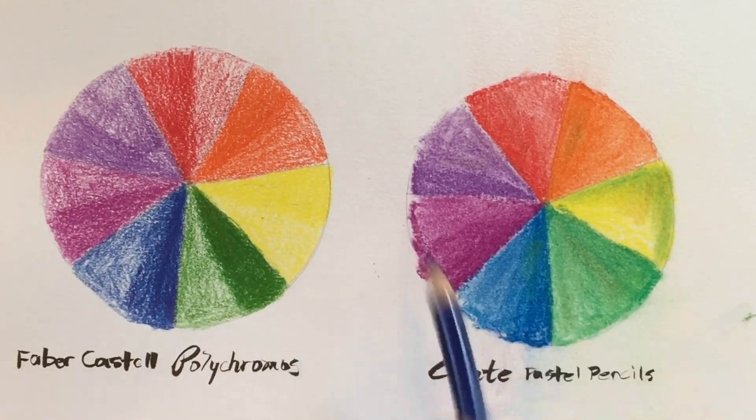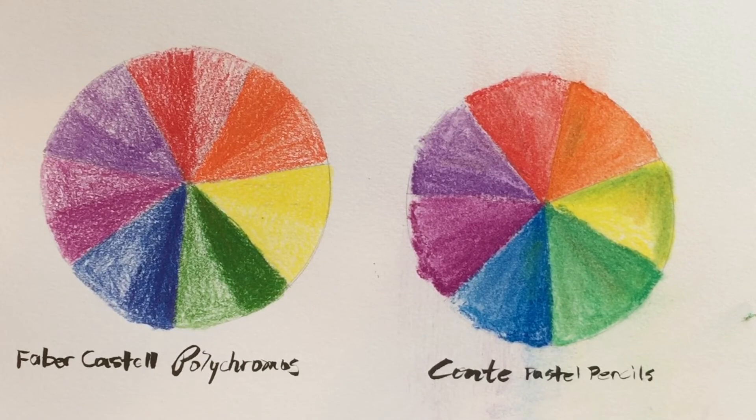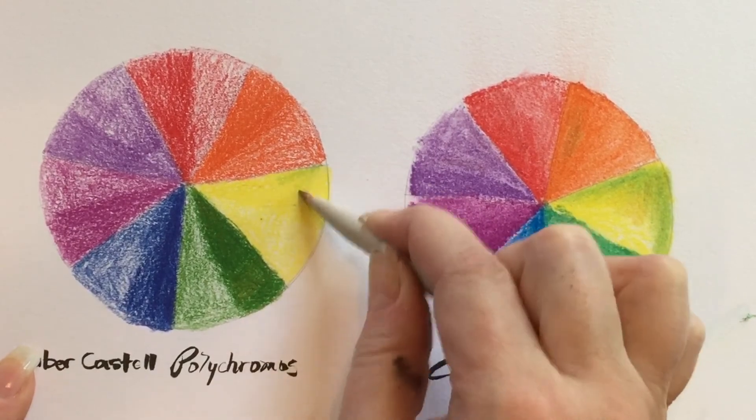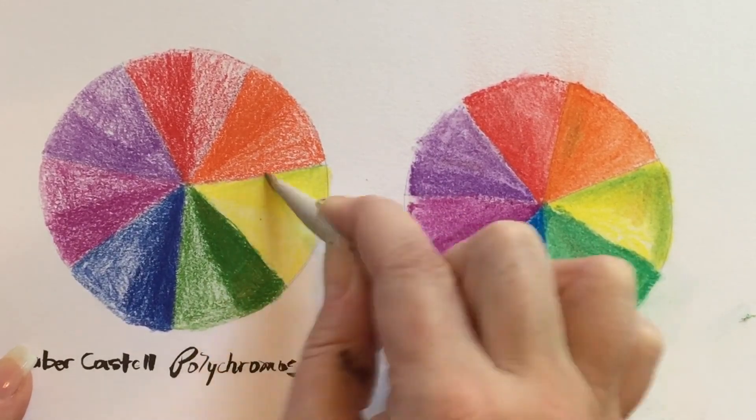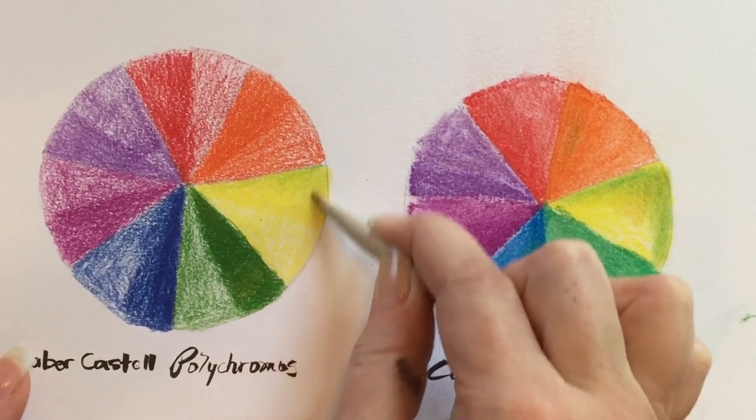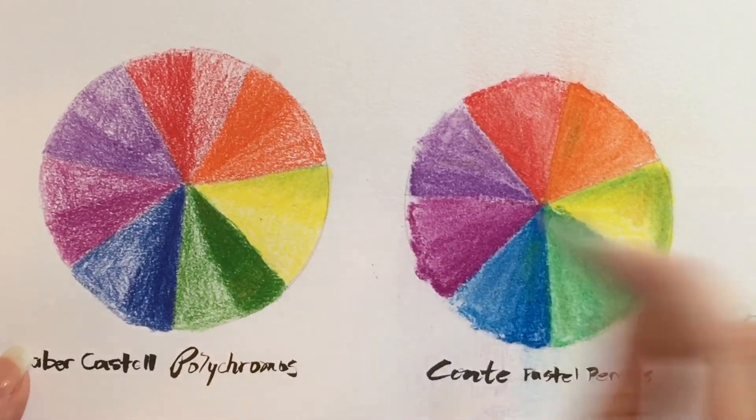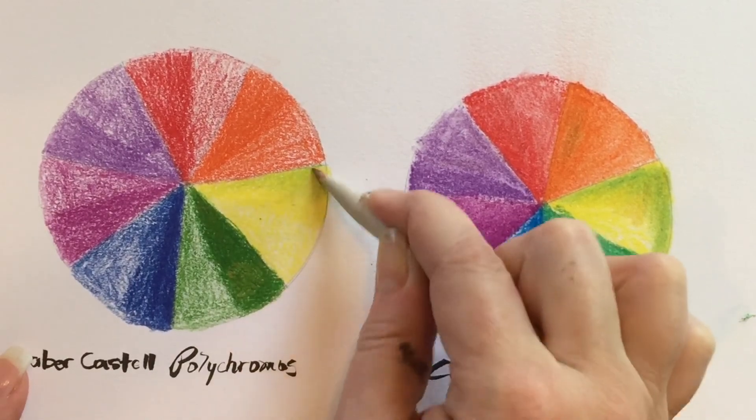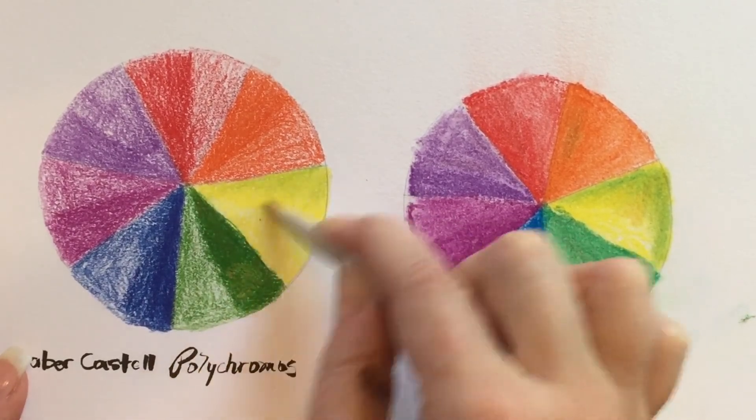There's also a little bit more effort to blend. If I took the stump, I could also get the effects that I did here. It's a little more subtle, which is actually really nice. It just depends on the medium that you like to work with.